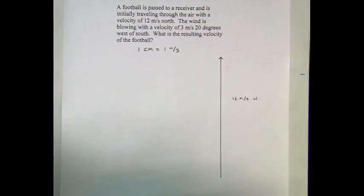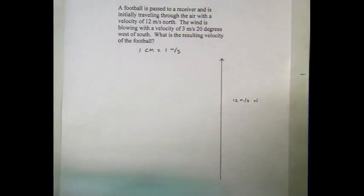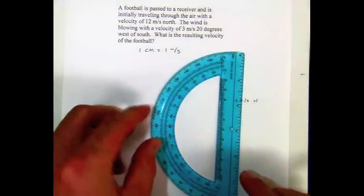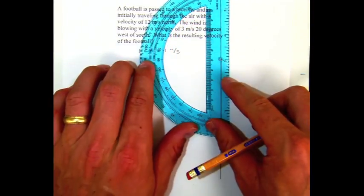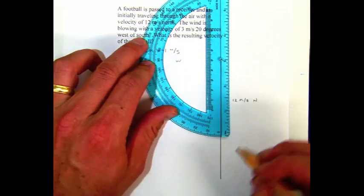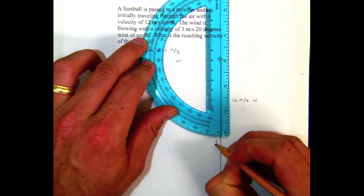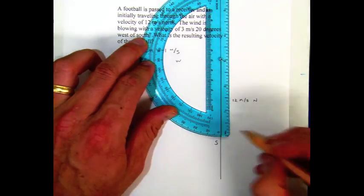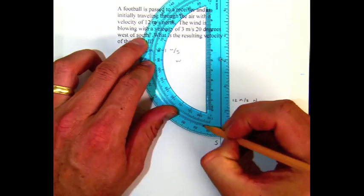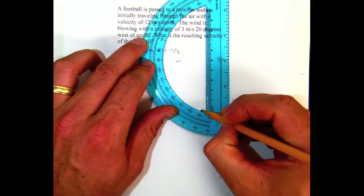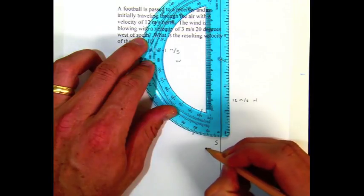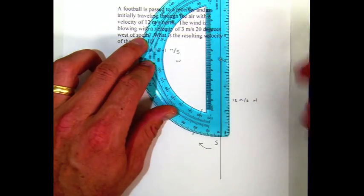The football is also being influenced by the wind, and that is at a velocity of 3 meters per second at 20 degrees west of south. So we need to find where that is. So if this is west and this is south, the wind is 20 degrees to the west of south. So that 20 degree mark right there would represent 20 degrees west of south.